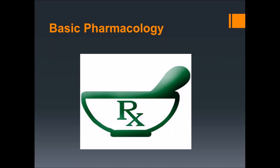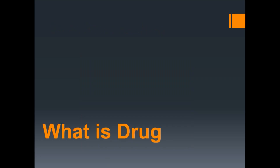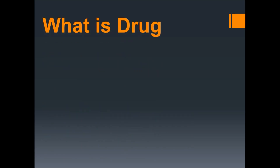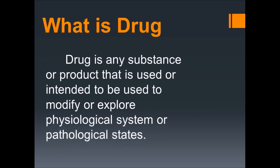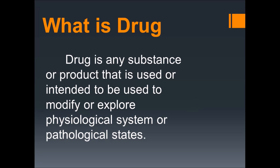Today I am talking about basic pharmacology. First topic: what is a drug? In simple terms, a drug is any substance or product that is used or intended to be used to modify or explore a physiological system or pathological state. For example, when we take paracetamol, it reduces body temperature, so paracetamol is a drug.